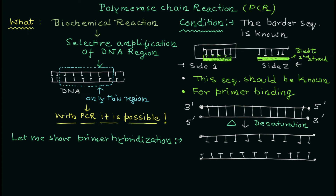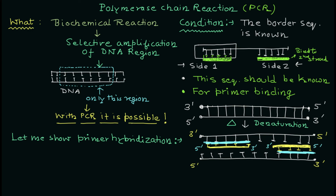At 94 degrees Celsius the DNA strands separate. Then, when you decrease the temperature, the adapter sequences are going to bind — this is the annealing step. The primer sequences, highlighted in yellow, will bind to one sequence, and the primer will run in the opposite direction. If your DNA sequence runs from 3-prime to 5-prime, the primer is going to run from 5-prime to 3-prime. Both strands will be amplified at the same time.